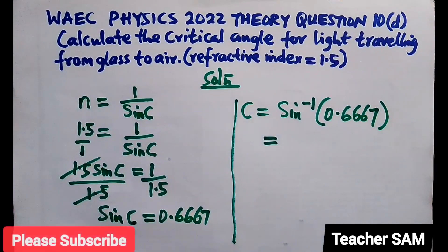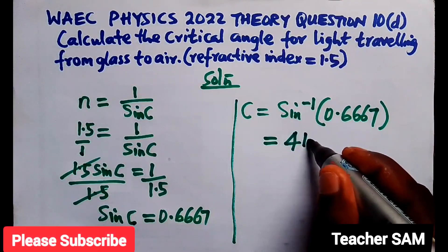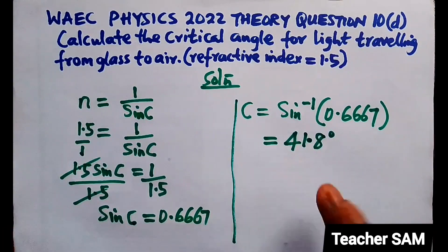So we have approximately 41.8 degrees. This is the critical angle for this light.